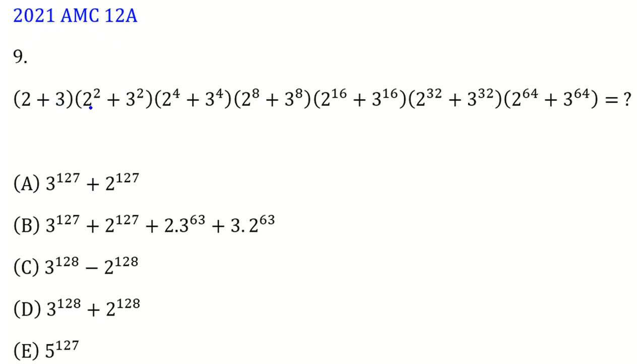It says (2 + 3)(2² + 3²)(2⁴ + 3⁴) up to (2⁶⁴ + 3⁶⁴) equals what?